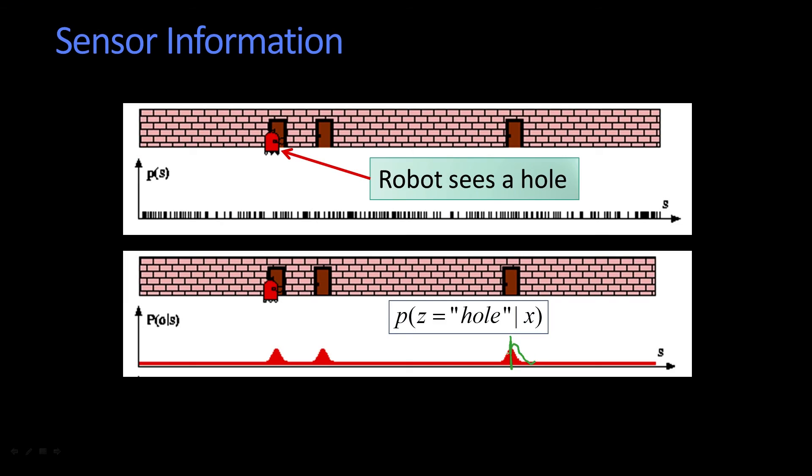And that's why I have this nice, tight little distribution like that. So remember, that's not P of X given the hole. It's the probability that I would see a hole given that I was at X.